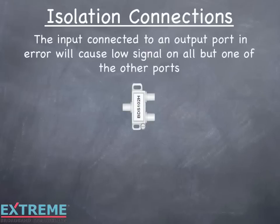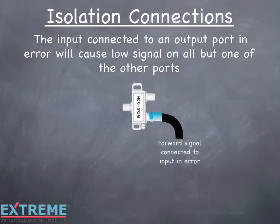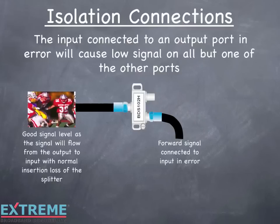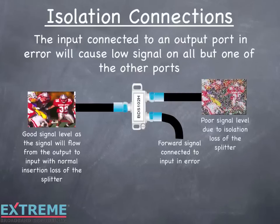An input connected to an output port in error will cause low signal on all outputs except the one that's connected to the input. Have you ever seen a connection where the input cable was connected to one of the output ports and the customer was experiencing poor reception on all but one outlet? One outlet has good signal level, as it's connected to the input port of the splitter and the signal flows from the output to the input with normal insertion loss. The other outlets have poor signal level due to the isolation loss of the splitter. Once the input cable is connected to the correct input port, all outlets will receive the proper signal.